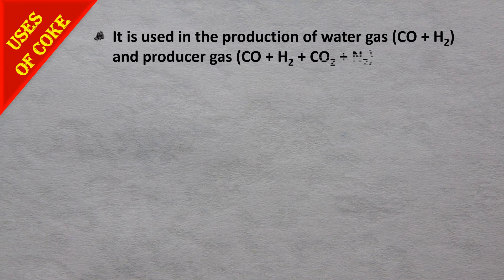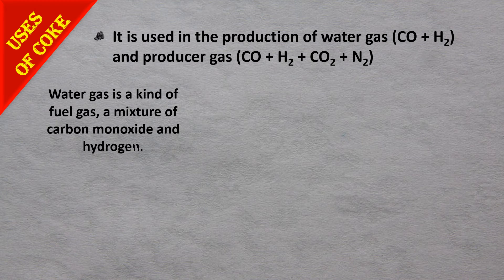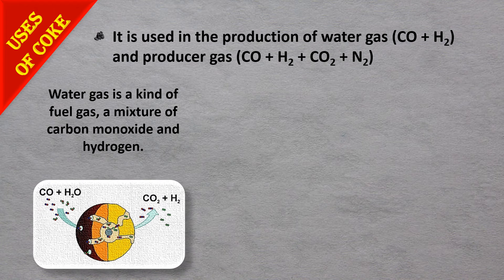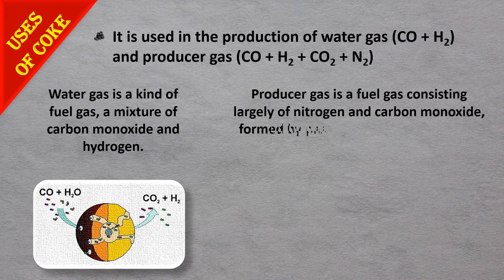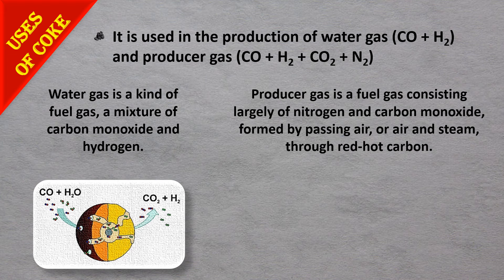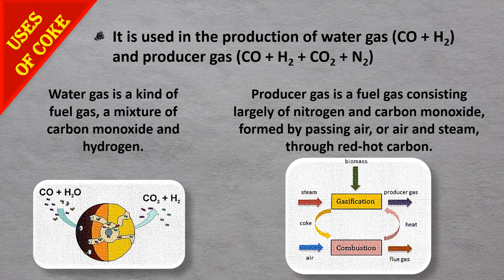Coke is also used in the production of water gas and producer gas. Water gas is a fuel gas — a mixture of carbon monoxide and hydrogen. Producer gas is a fuel consisting mainly of nitrogen and carbon monoxide. Both are formed by passing air, or air and steam, through red-hot carbon, so coke is used to produce these two gases.